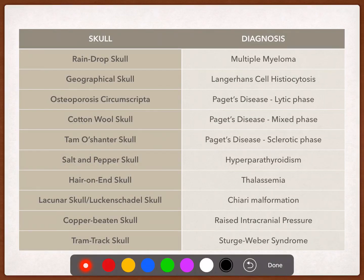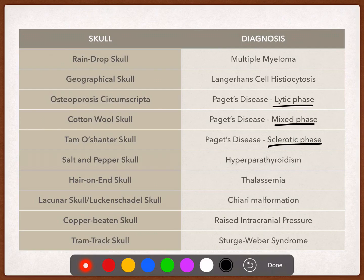Here is the summary table to remember: Raindrop skull — multiple myeloma, multiple punched out lesions. Geographical skull — looks like a map, seen in a young patient, characteristic of Langerhans cell histiocytosis. Osteoporosis circumscripta — Paget's disease lytic phase. Cotton wool skull — mixed phase of Paget's disease. Tamo center skull — sclerotic phase of Paget's disease. Salt and pepper skull — multiple tiny radiolucencies, hyperparathyroidism. Hair on end skull — diploic space widening, thalassemia. Lacunar skull — Chiari malformation. Copper beaten skull — gyral impressions, raised intracranial pressure. Tram track skull — Sturge-Weber syndrome.